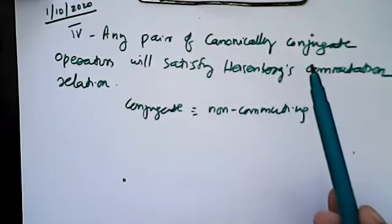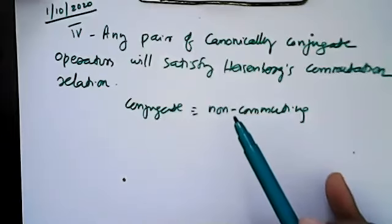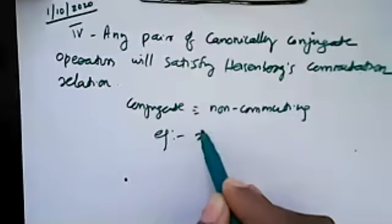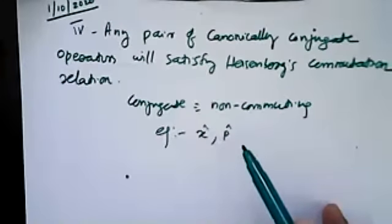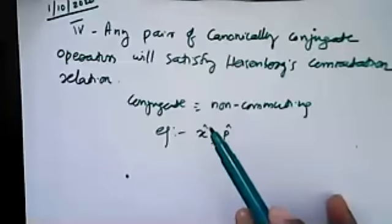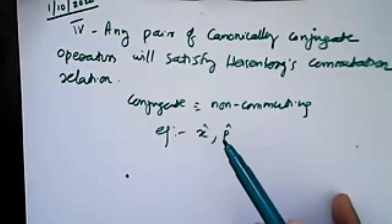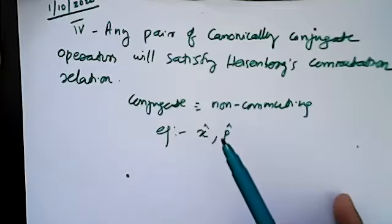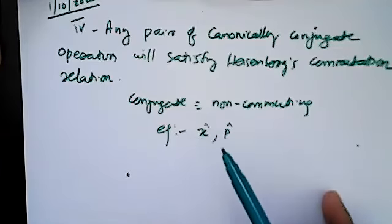Canonically conjugate operators are, for example, position and momentum. These are non-commuting or anti-commuting operators. This pair obeys the uncertainty principle, which I think you are familiar with. So position and momentum form a canonically conjugate pair.